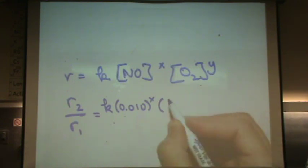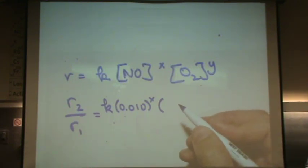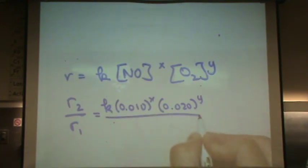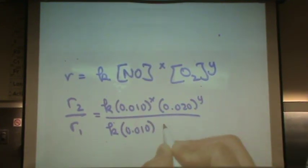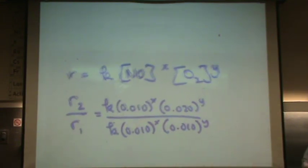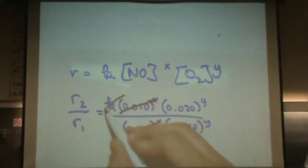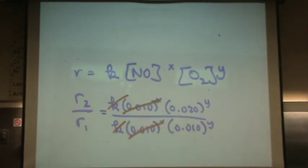So, just copying this right out of the table right now for reaction two. And then right out of the table for reaction one on the bottom. And that will cause some awesome stuff to cancel. Let me also write the rates in there.